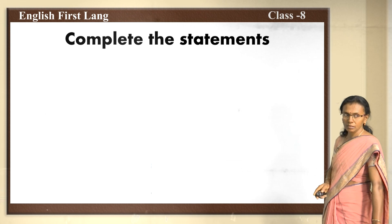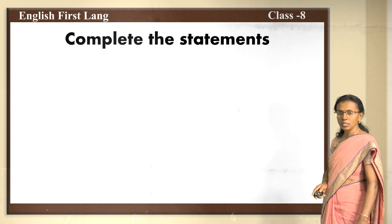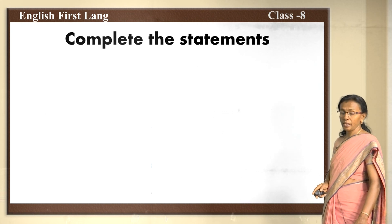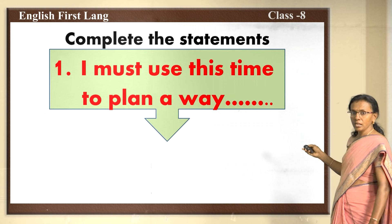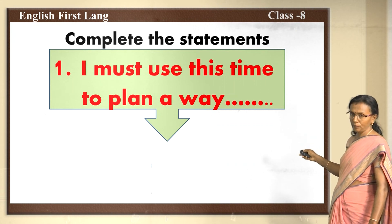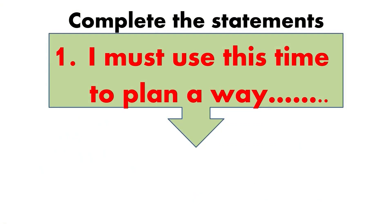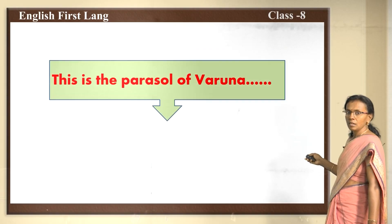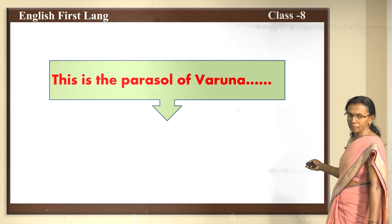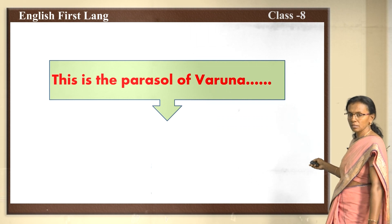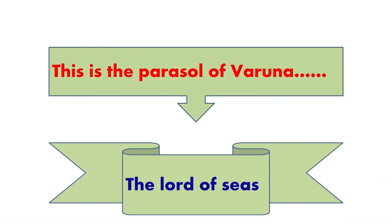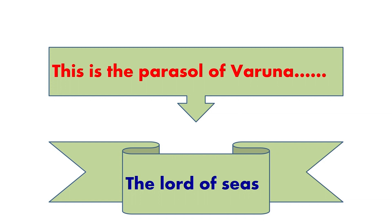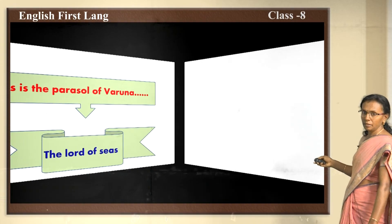Now children, complete this statement — you have your textbook. See the first statement: 'I must use this time to plan a way...' Check your textbooks and find the answer. Next: 'This is the parasol of Varuna...' — Who was Varuna? The Lord of Seas. You have done a great job.